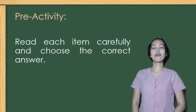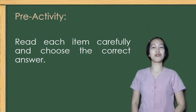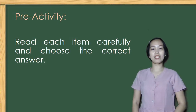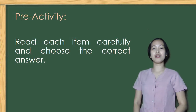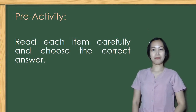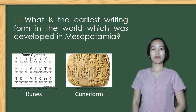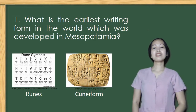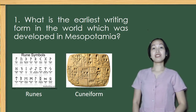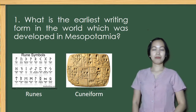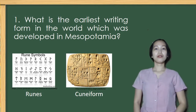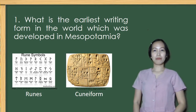Let us first assess your prior knowledge regarding symbols and human practices. In this activity, you are going to choose the correct answer based on the question given. What is the earliest writing form in the world which was developed in Mesopotamia — runes or cuneiform?